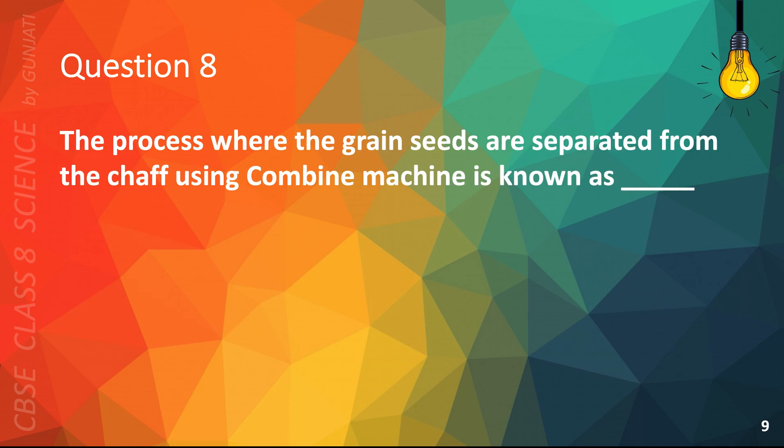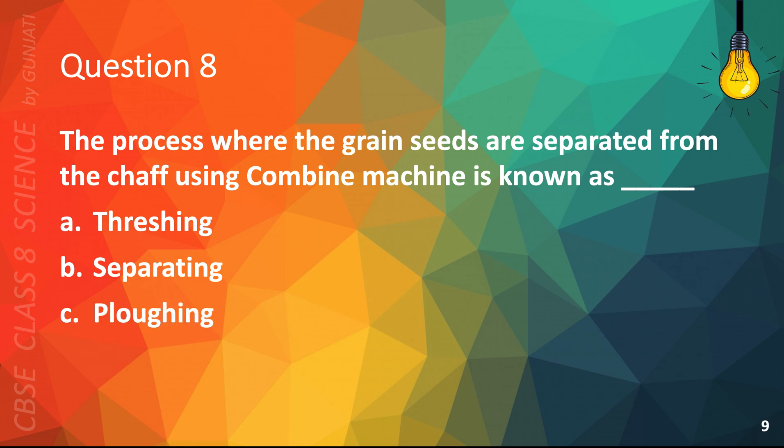Question 8. The process where the grain seeds are separated from the chaff using a combine machine is known as: A. Threshing, B. Separating, C. Plowing, or D. Sowing.